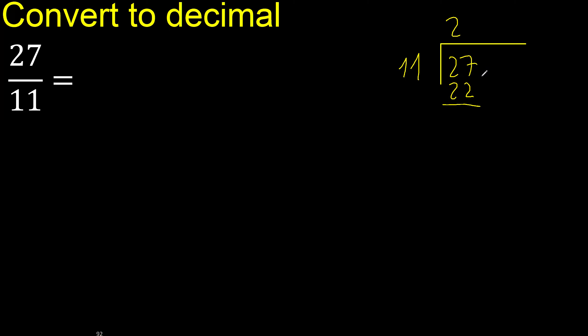27 minus 22 is 5. Next there is no number, therefore complete, always complete with 0 here with point. 50.